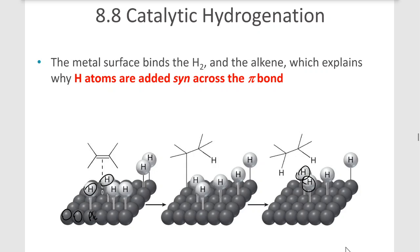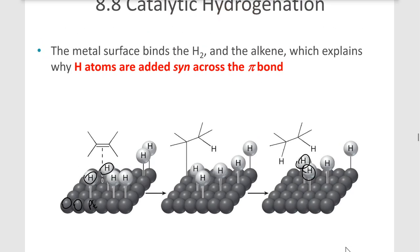There's not really a mechanism for this reaction, just that the hydrogens are adsorbed onto the surface of the metal catalyst, the alkene comes along, picks up the hydrogens and floats away. That's why they're added syn across that pi bond—because they're both going to add from the same face.